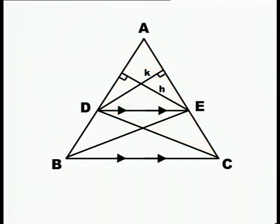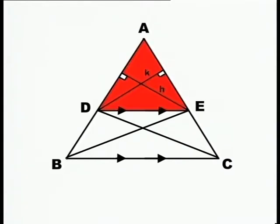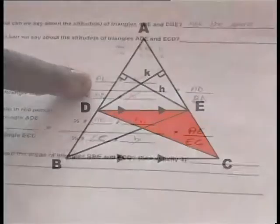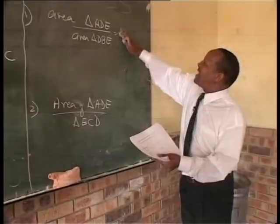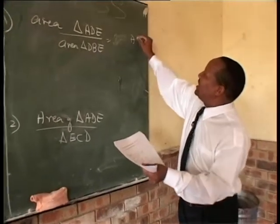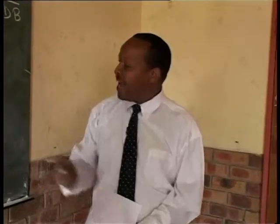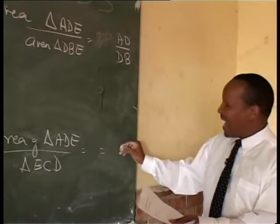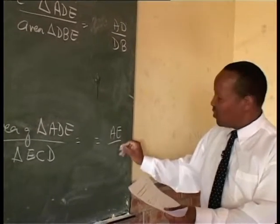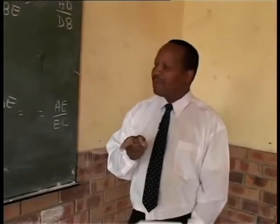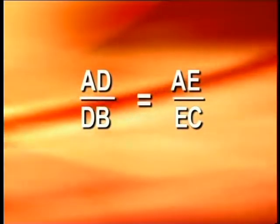The worksheet requires learners to divide the area of triangle ADE by triangle DBE, and the area of triangle ADE by triangle ECD. The values are substituted and cancelled out. The result for the first division gives AD over DB, and the second gives AE over EC. The challenge is now to prove that the top equation equals the bottom equation — that is, AD divided by DB equals AE divided by EC.